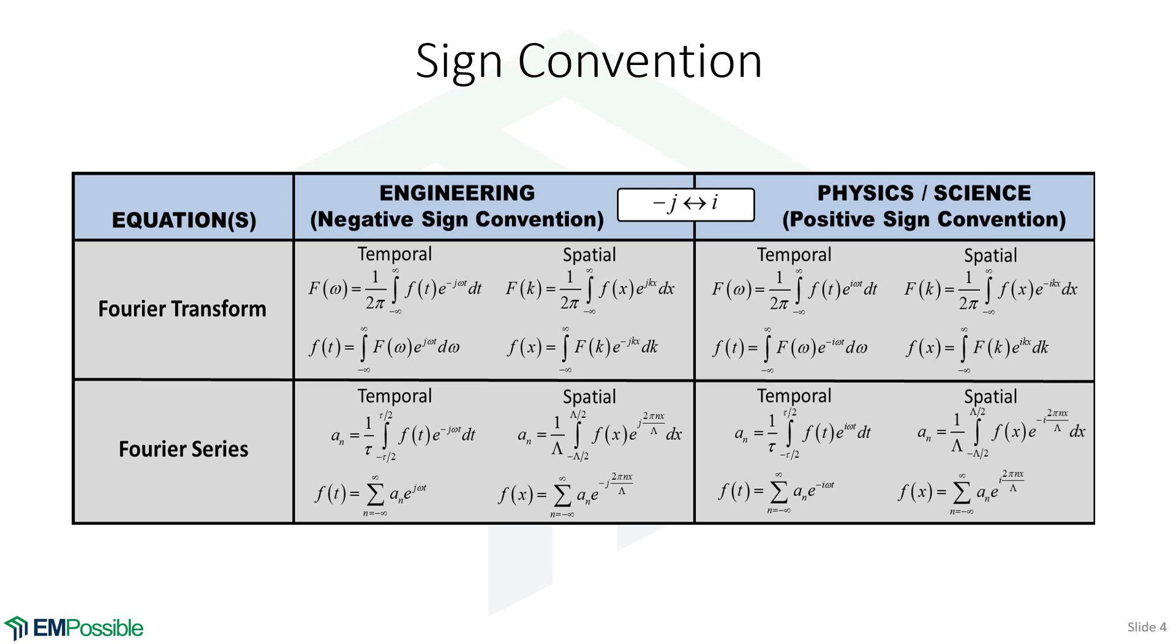It's important to understand a sign convention here. Engineers, when it comes to Fourier transforms, we tend to use the negative sign convention. So to differentiate that from the positive sign convention used by a lot of physics and science, for engineering I'll use a J and a minus J, minus for the negative sign convention, and I for the positive sign convention.